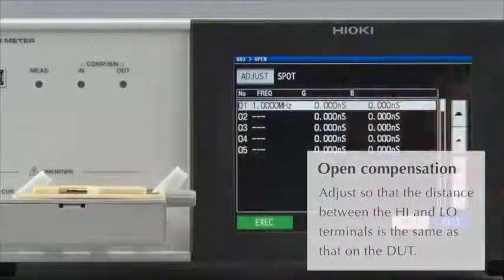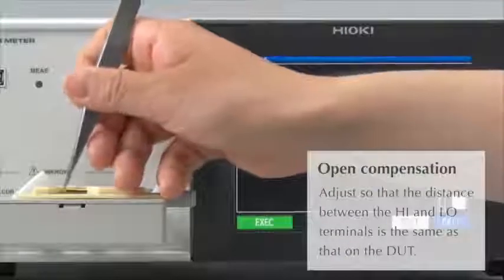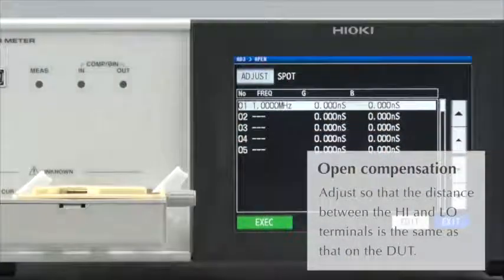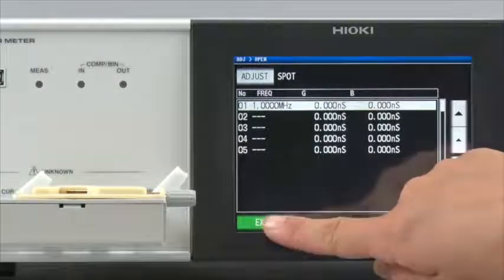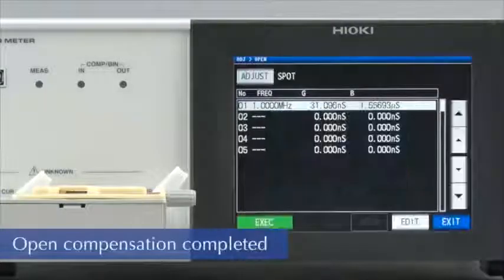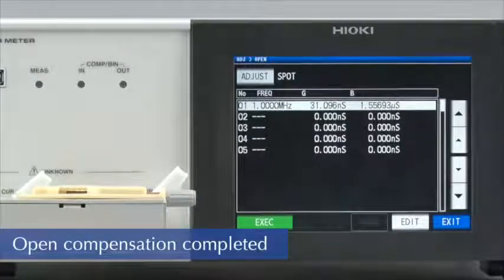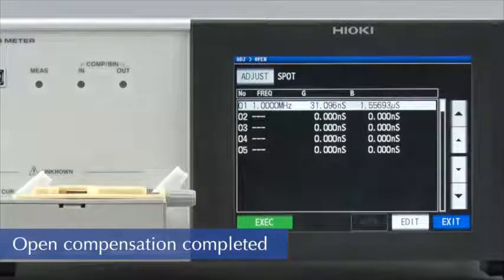Now, remove the DUT. By doing this, you will be conducting open compensation with the electrodes spaced at exactly the same distance as that on the DUT. This completes open compensation at 1 MHz.